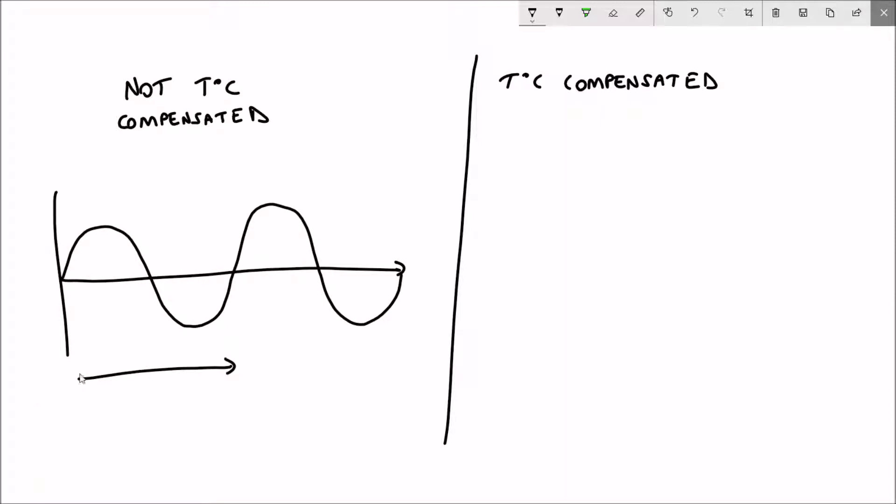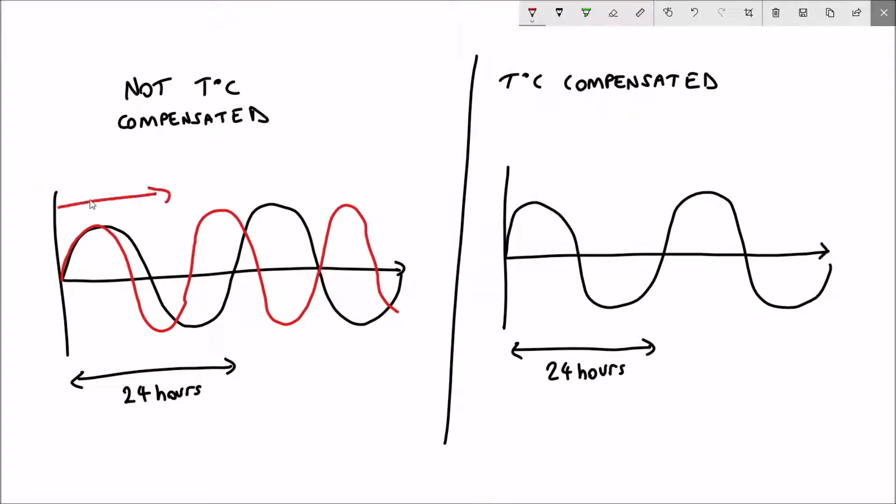And lastly, it has to be temperature compensated, i.e. it can't be faster when it's hotter and it can't be slower when it's colder. As can be seen here on the right hand graph, even at a higher temperature, the 24-hour rhythm remains the same, i.e. it's temperature compensated.